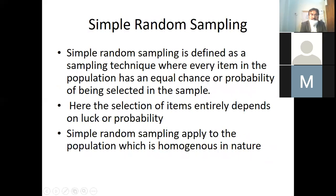Simple random sampling is defined as a sampling technique where every item in the population has an equal chance or probability of being selected in the sample. Here the selection of items entirely depends on luck or probability. Simple random sampling applies to populations which are homogeneous in nature.